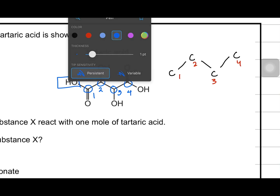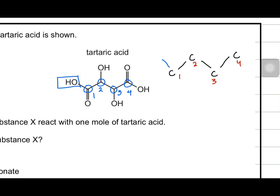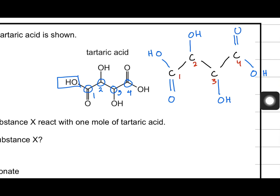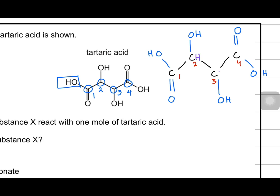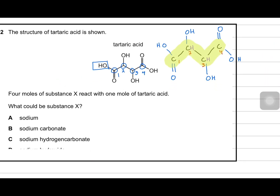You can see that on carbon one there's an OH group and a double bonded oxygen. On carbon number two there's another OH. Carbon three has another OH. Carbon four has also an OH, plus it also has a double bonded oxygen. These are the functional groups — or you can call them non-carbon atoms.